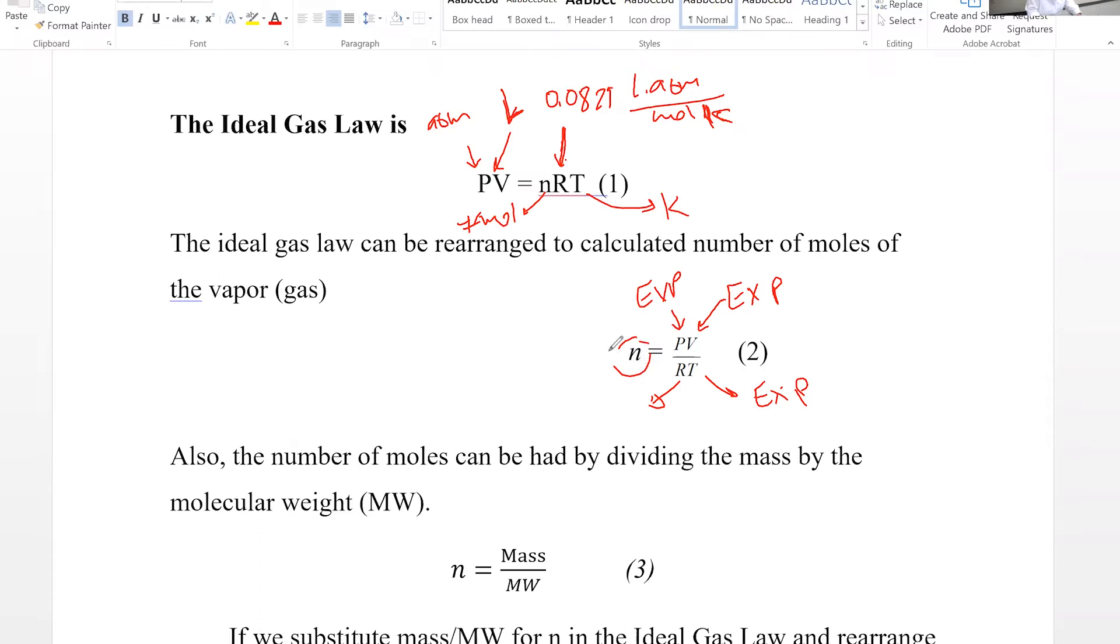If you find the number of moles using the experimental values found in the lab, then we can also get the mass of the gas. We measure the mass of the empty flask, we measure the mass of the flask plus the gas, we subtract and we get the mass of the gas.